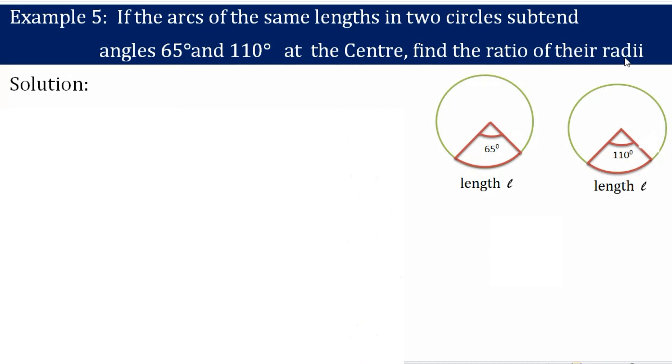Next, find the ratio of their radii. So the radius of this circle is R1 and the radius of this circle is R2. Now we need to find the ratio of R1 and R2. That's what the question mentions.